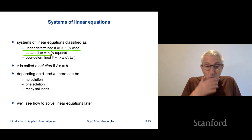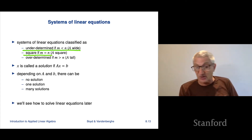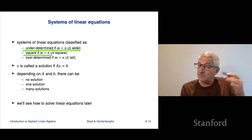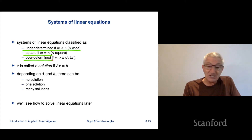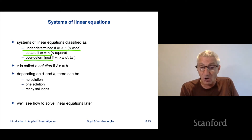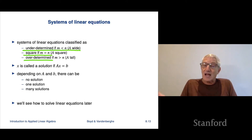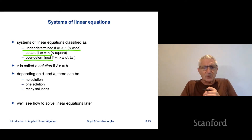The system is called a square system if m equals n — for example, 20 variables and 20 equations. And it's called overdetermined if there are more equations than unknowns, meaning the coefficient matrix A is tall. An example would be 10 variables and 20 equations. These names will become clearer later in the course.